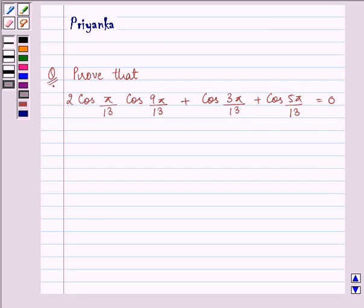Hi and how are you all today? I am Priyanka and let us discuss the following question. It says, prove that 2 cos π/13 cos 9π/13 plus cos 3π/13 plus cos 5π/13 is equal to 0.